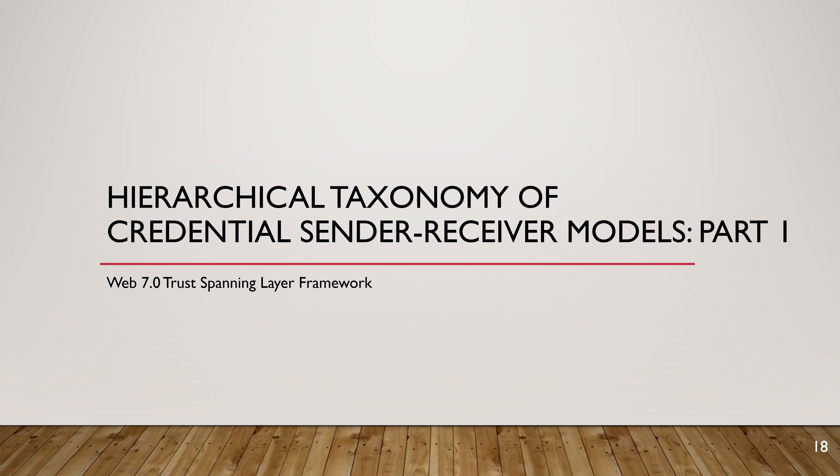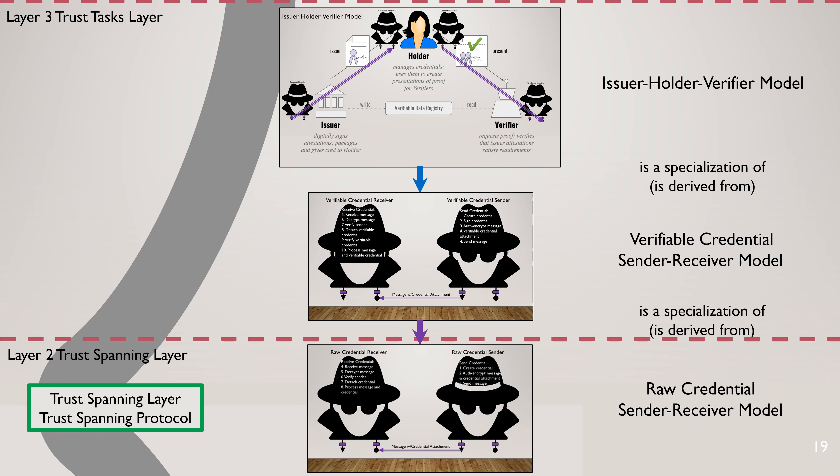Once we've seen these models, we begin to see a hierarchy of derivations or specializations. At the bottom is the raw credential receiver model. Above that is the verifiable credential sender-receiver model — a specialization of the raw credential model. Above that is the issuer-holder-verifier model, a specialization of the verifiable credential model. This hierarchical taxonomy is the seed or embryo for the verifiable credential architecture reference model.